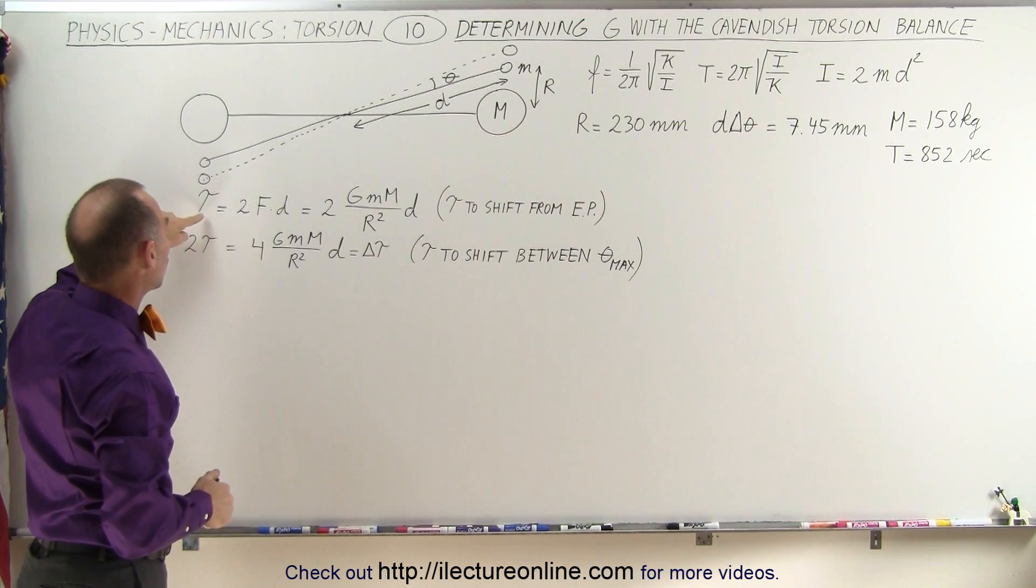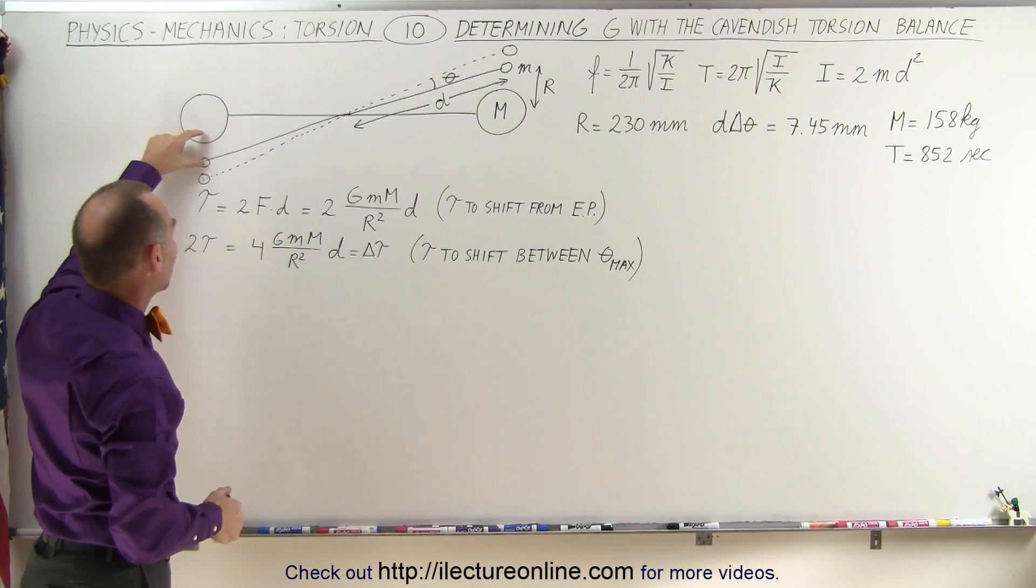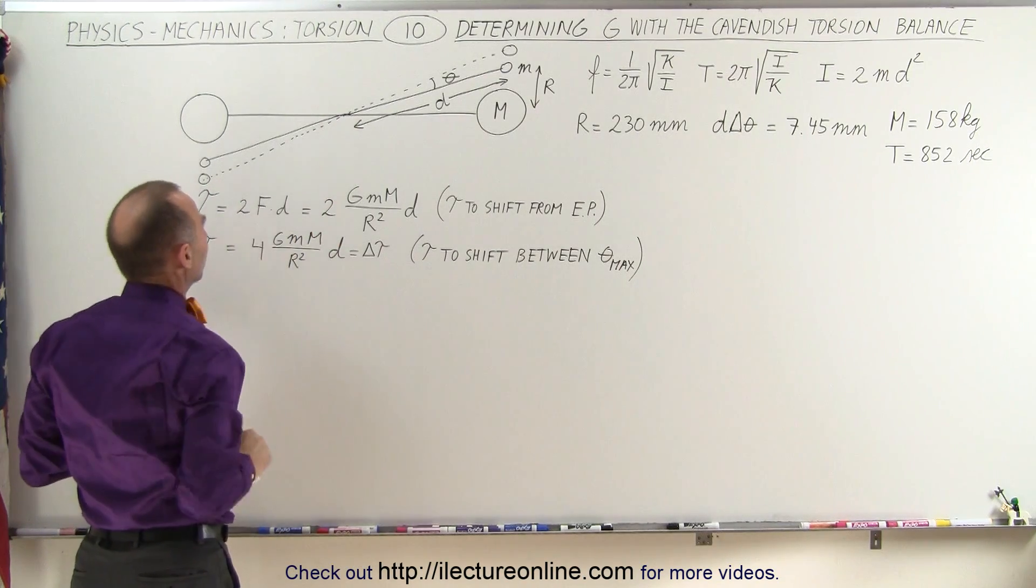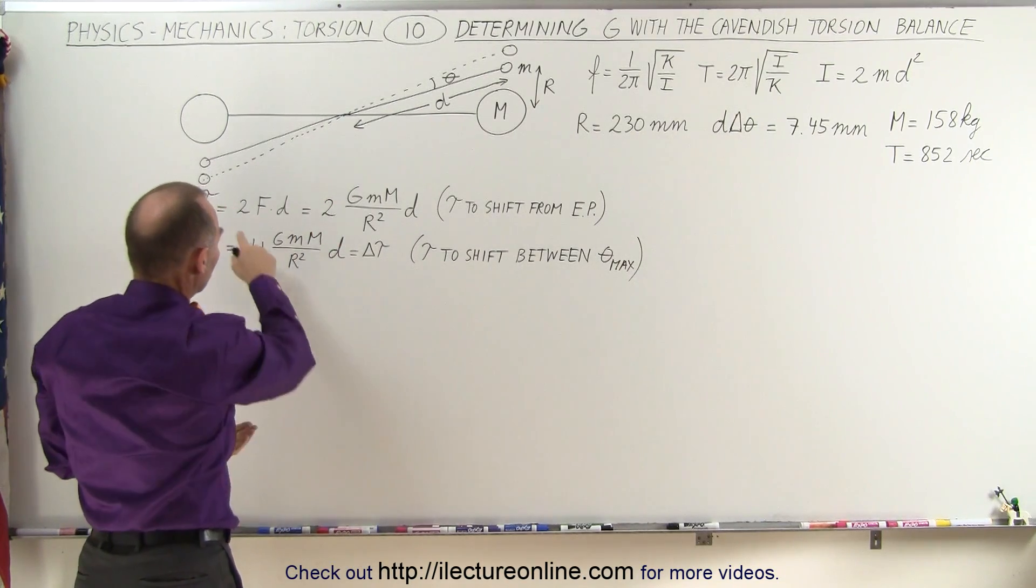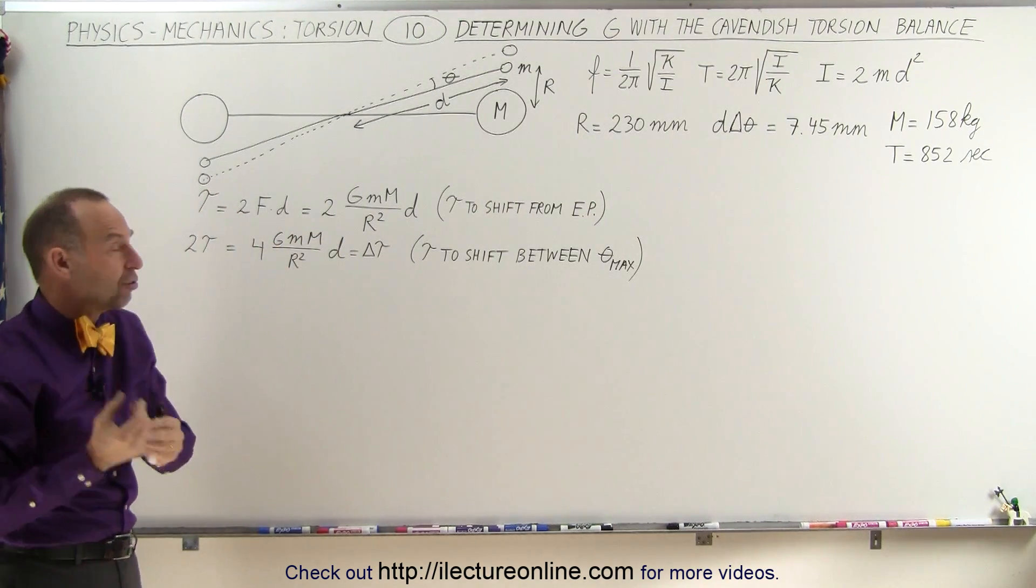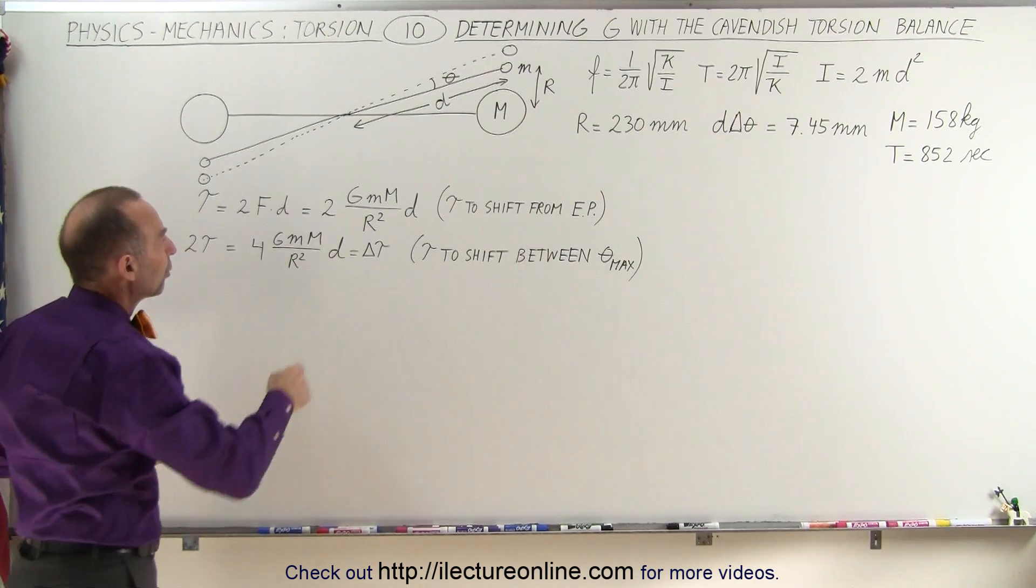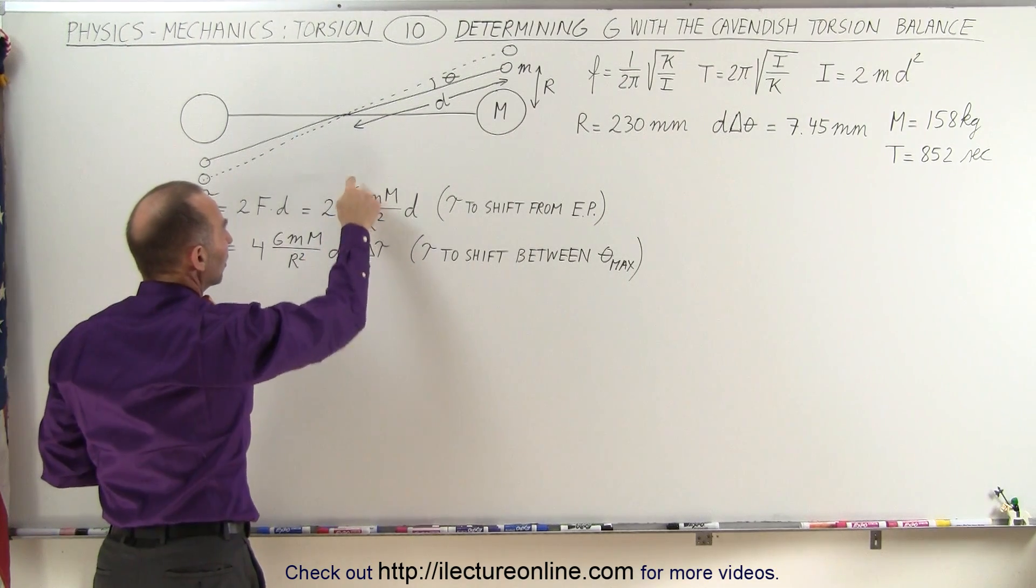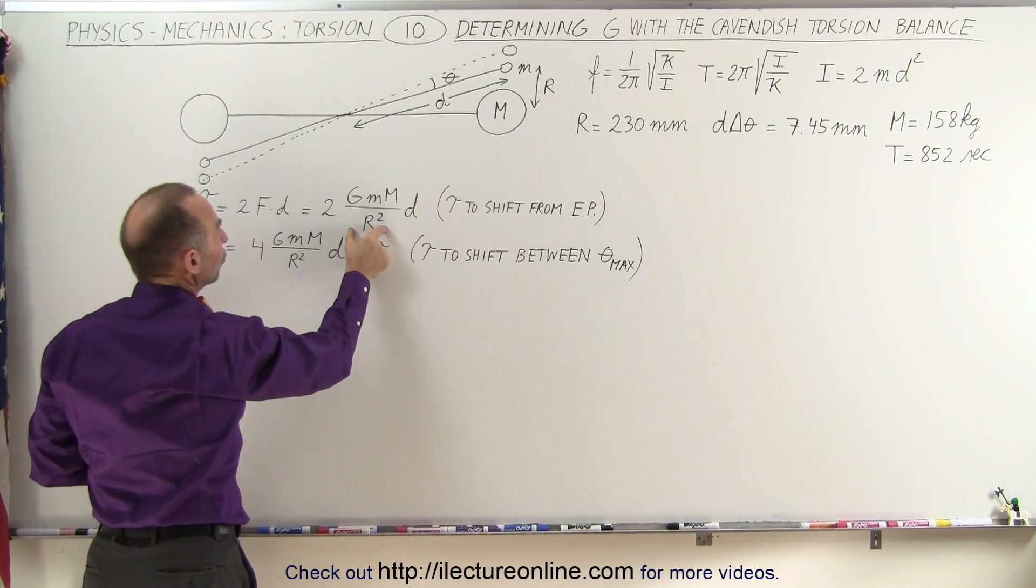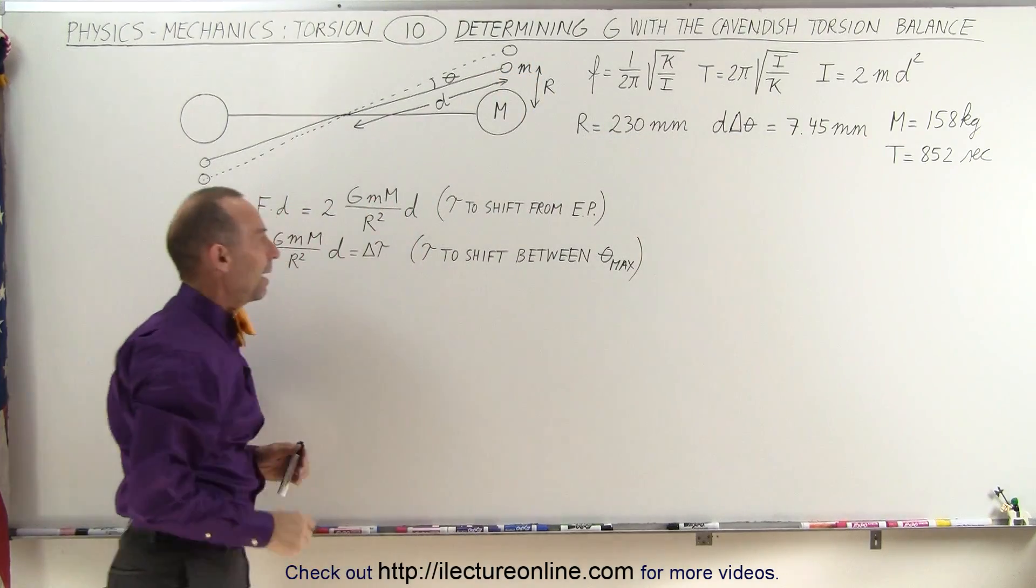First of all, we know that the torque is going to be equal to twice the force between these two masses because there's two of them, one on each side. And of course it would be force times distance. The force then of course would be the equation that Newton came up with to calculate the force of gravity, which is the constant G that we're looking for, times the product of the two masses divided by the distance between them squared.